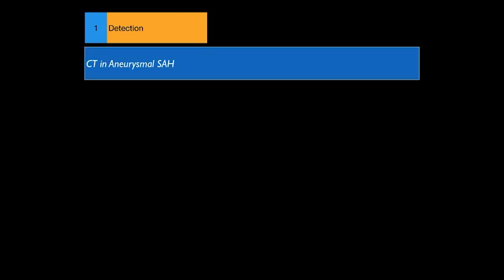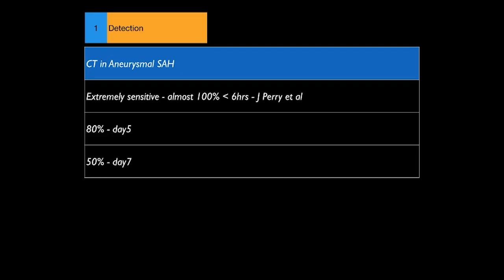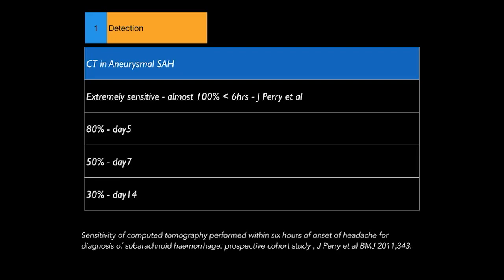In detection of subarachnoid hemorrhage, the most important modality is still CT scan, which is quite sensitive if done within 6 hours of the ictus. It remains sensitive until day 5, but sensitivity drops exponentially after that — to about 50% at day 7 and 30% at day 14.